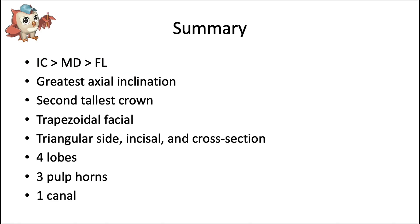To summarize the maxillary central incisor: the incisocervical dimension is greater than the mesiodistal dimension, which is greater than the faciolingual dimension. It has the greatest axial inclination and the second tallest crown. It's trapezoidal from the facial view, triangular from the side, incisal, and cross-section views, and most often has four lobes, three pulp horns, and one pulp canal. Key trends from midline going posteriorly: proximal contacts move more cervically, cervical lines get flatter, and axial inclination decreases.